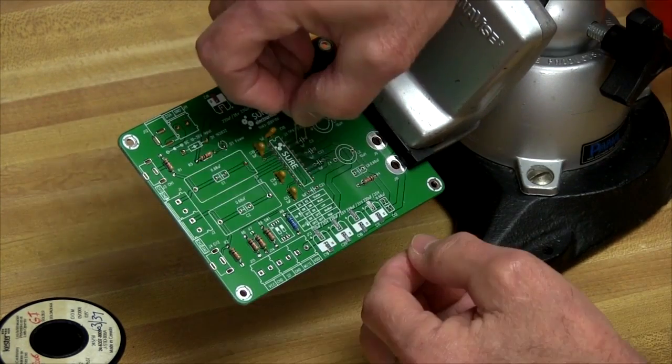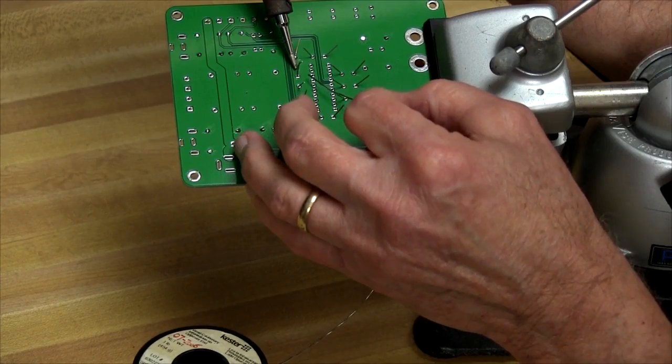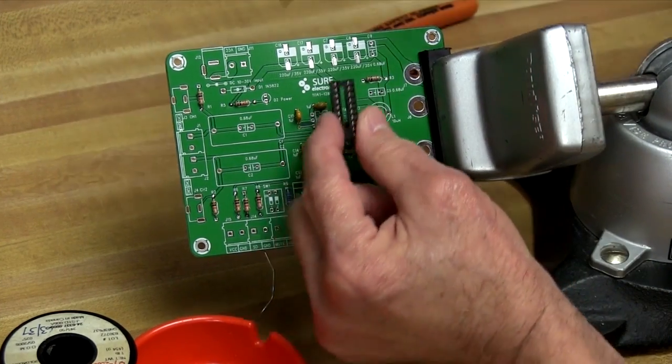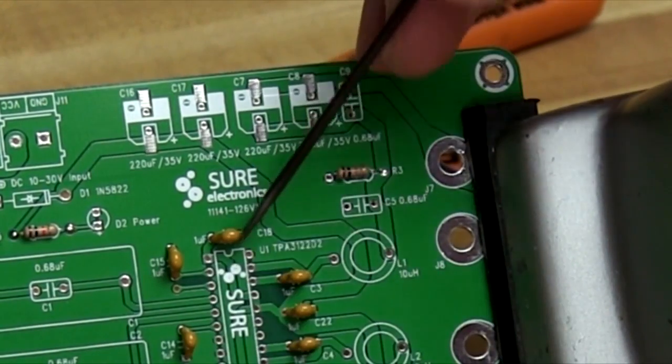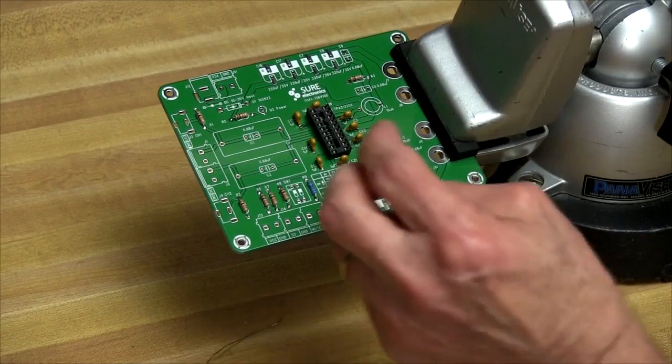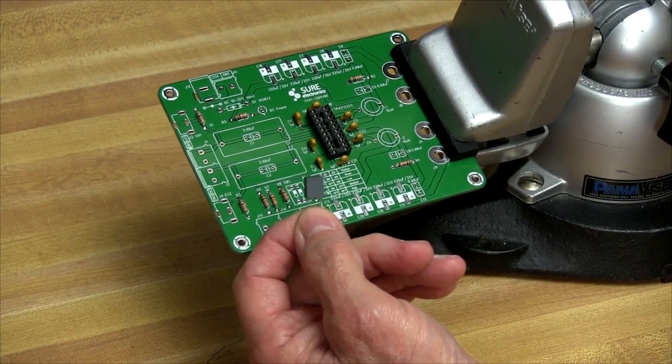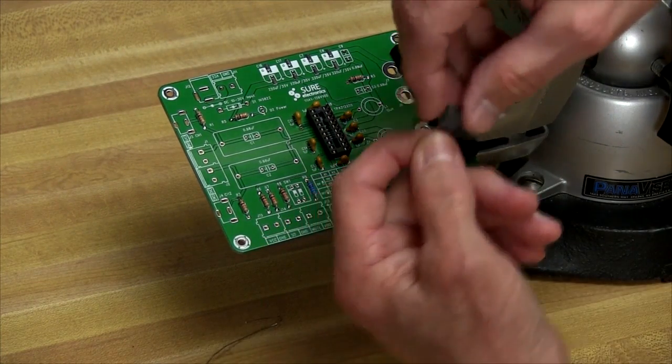After soldering the resistors, I'll install the 1-microfarad capacitors, then move to the IC socket. Notice one end has an indent - match that with the indent on the board to identify pin 1. With the IC socket mounted, we have more capacitors: 0.68-microfarad mylar capacitors, which are a little larger.